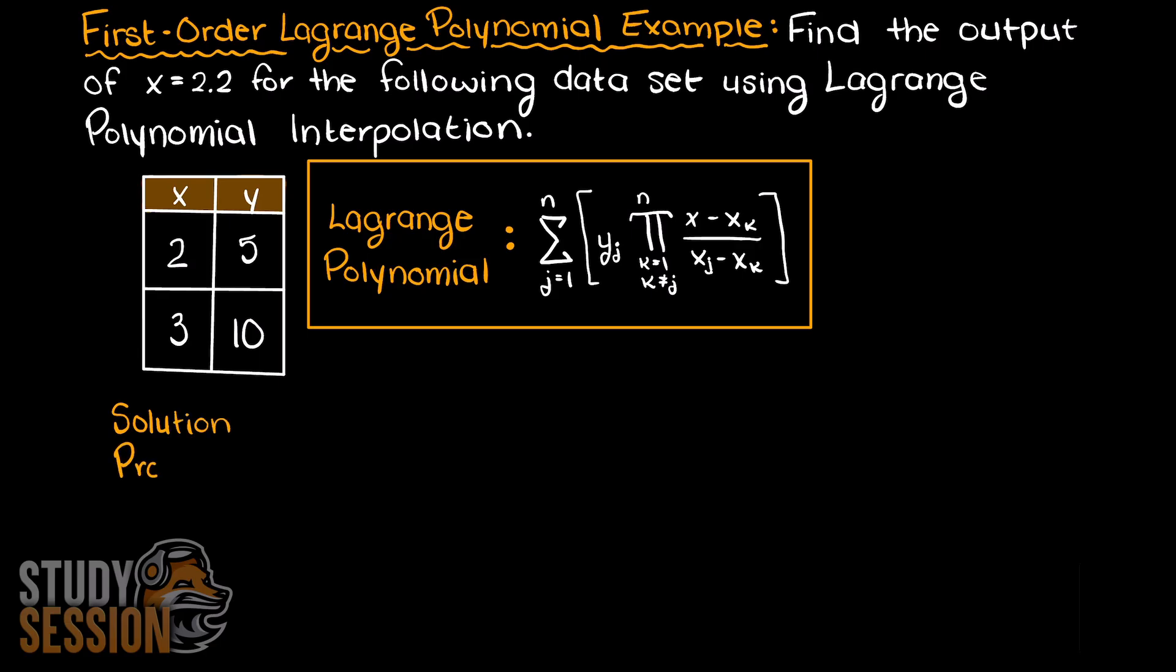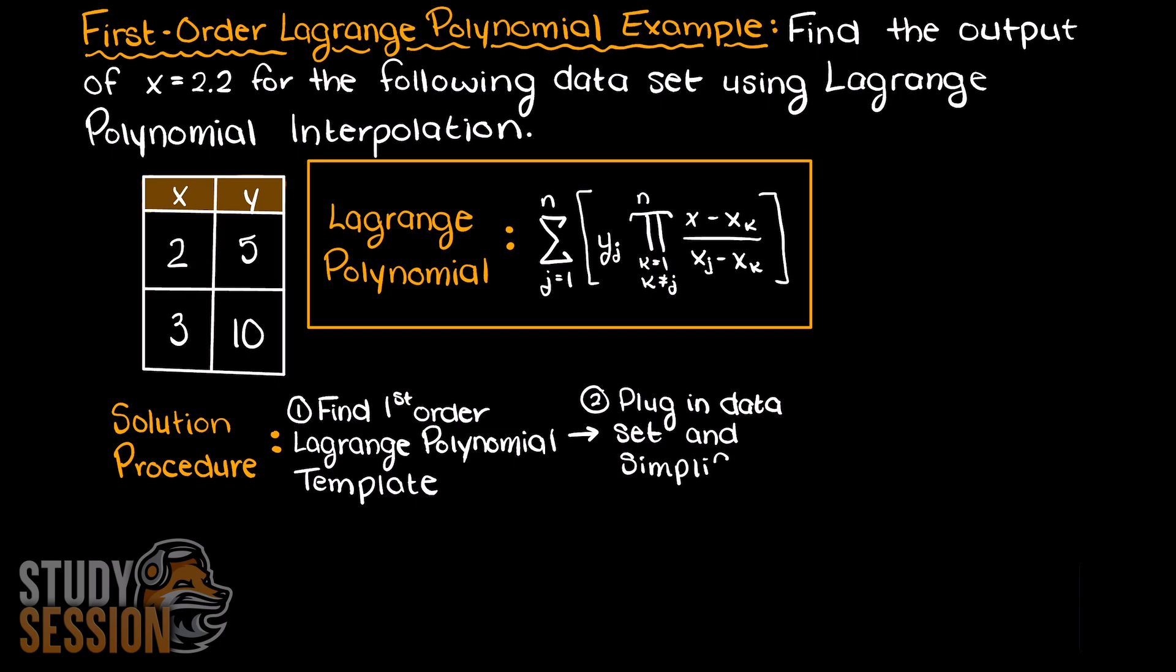We will first begin by using the formula above to develop our general first order Lagrange polynomial equation. Then we are going to plug in our known discrete data points, simplify our polynomial, and then lastly once we have the Lagrange polynomial developed we can plug in the input that we are asked for and we can finally solve for the output.